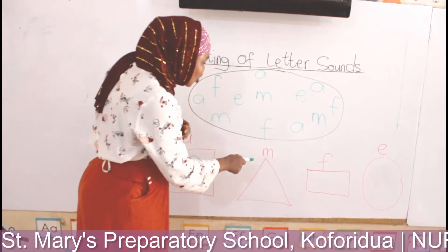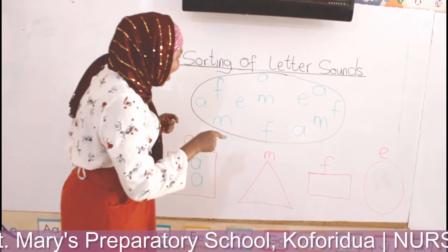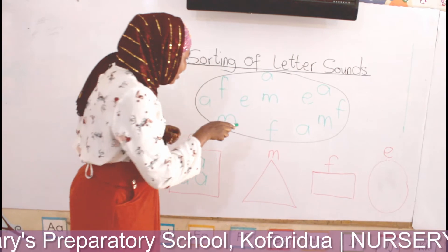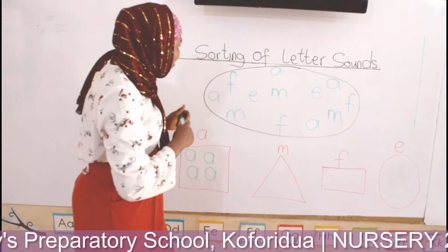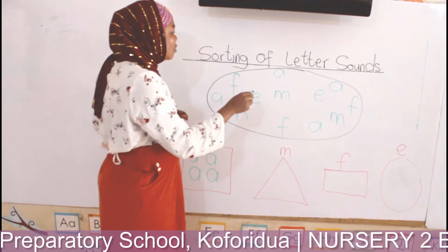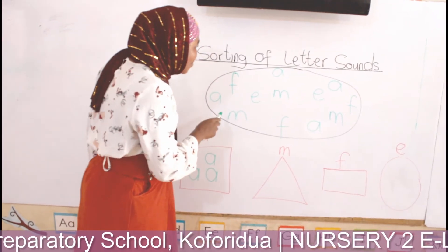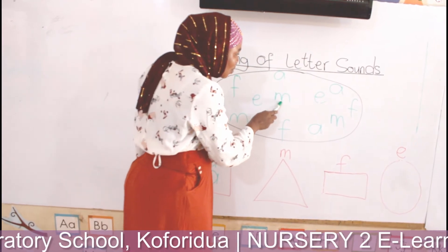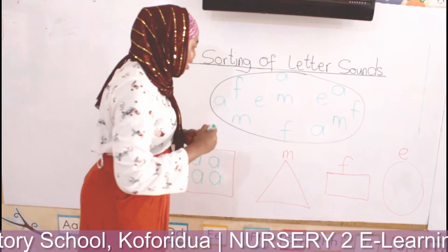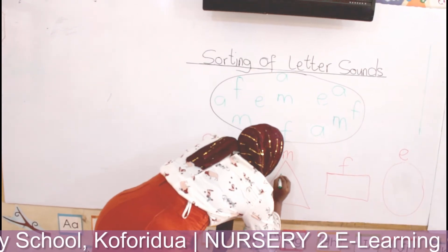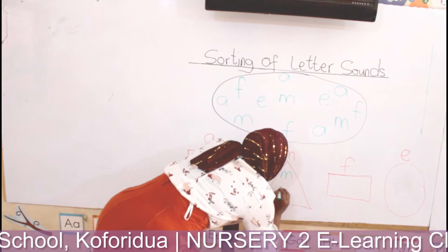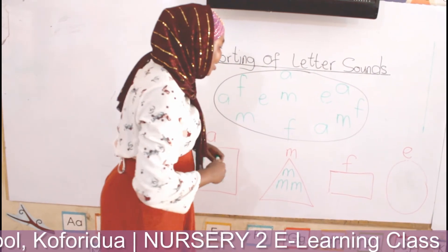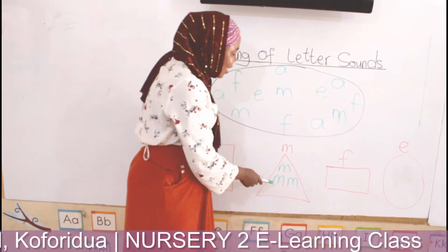Now let's look at the next shape, which is the triangle. Let's look at the top of the triangle. What letter can we see on top of the triangle? M. M. Now let's go inside the oval again. Let's see how many M's we can find in the oval. One, two, three. Very good. Now let's write M — one, two, three. Three. Very good. So this is M. Let's say it again — M.